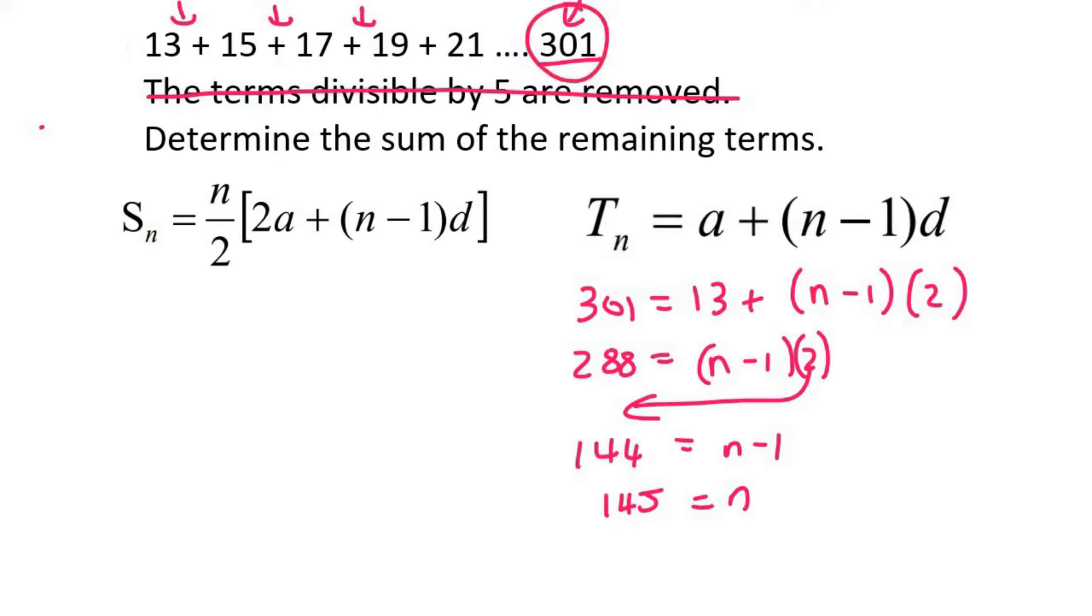But because it's the last term, that also shows us how many terms we have. So in this original sequence, we have 145 terms.